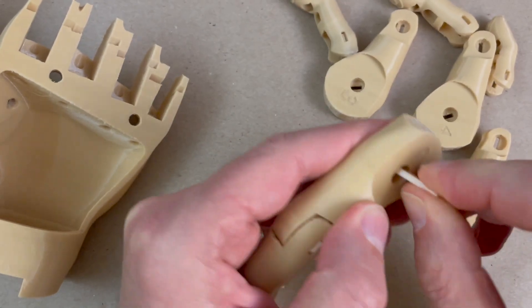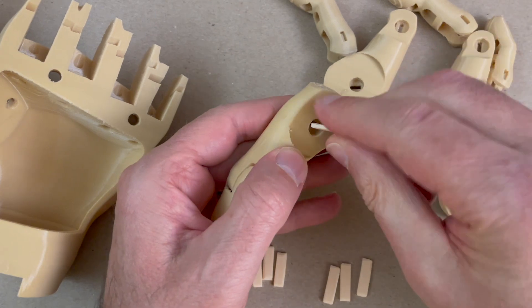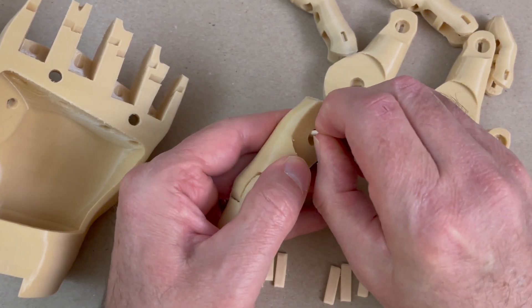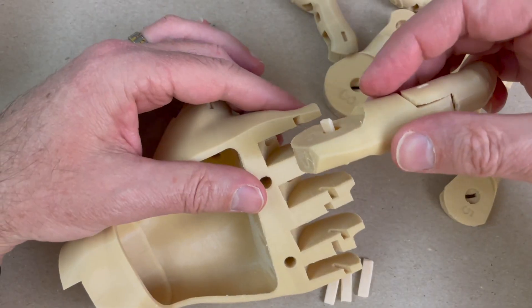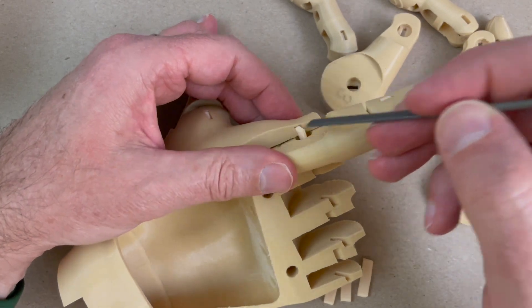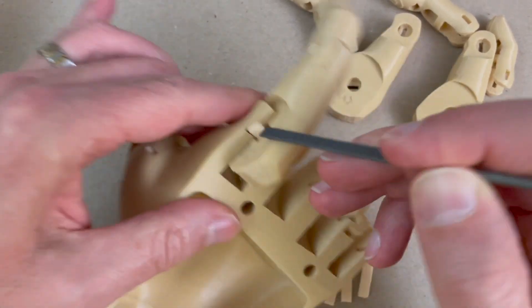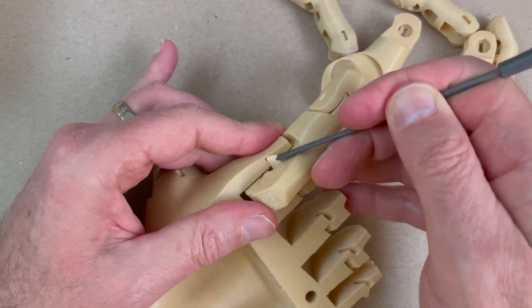Now the knuckle hinges are all the same, so you should have four knuckle hinges that are the same length. When you slip them in, they should go in pretty easily. They fit deeper into the hand palm itself now than they did in the version two. So that holds the finger in nicely so it doesn't fall out while you're still doing this part of the assembly.